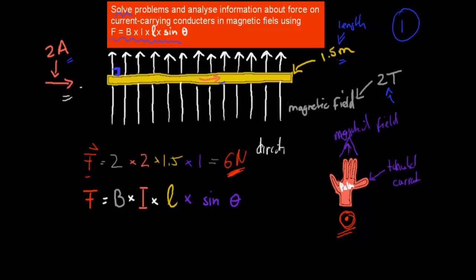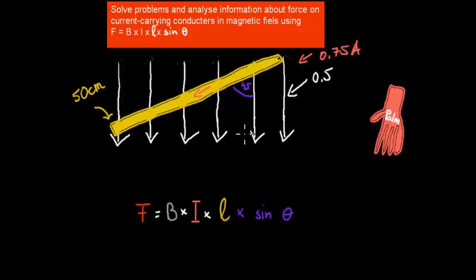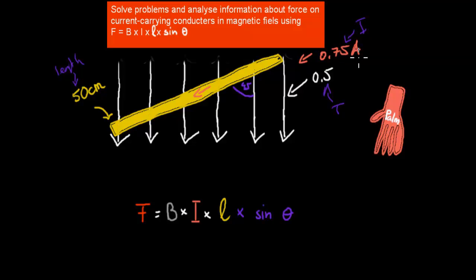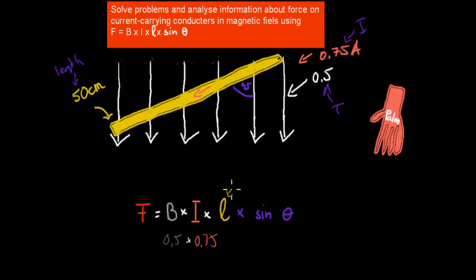The next question: we have our length which is 50 centimeters, our magnetic field is 0.5 Teslas, and our current is 0.75 amps. The direction of flow is given. So again, all we do is apply the formula. B was 0.5 Teslas, our current is 0.75 amps. The length was 50 centimeters — remember this must be in meters — so that converts to 0.5 meters.